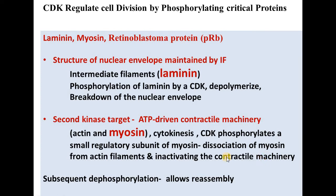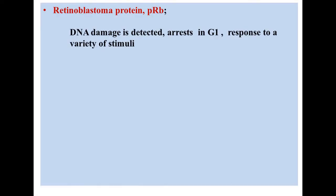Because the contractile machinery is made by both actin and myosin, when CDK phosphorylation of myosin is done, myosin dissociates from actin filaments and the machinery is inactivated. Subsequent dephosphorylation then allows the reassembly of the contractile apparatus for the next round of cytokinesis.